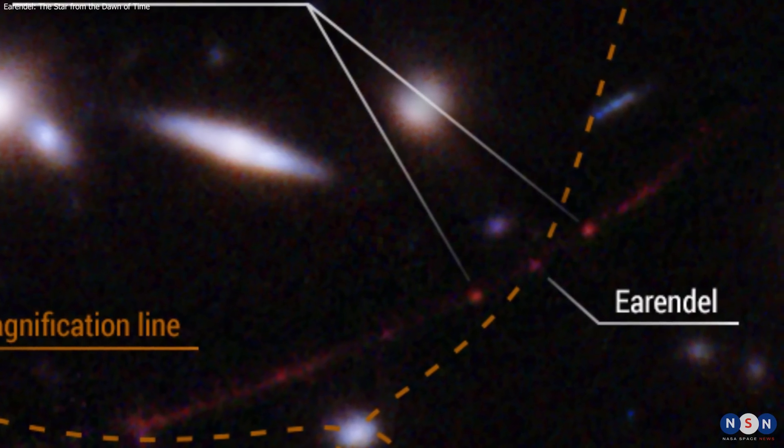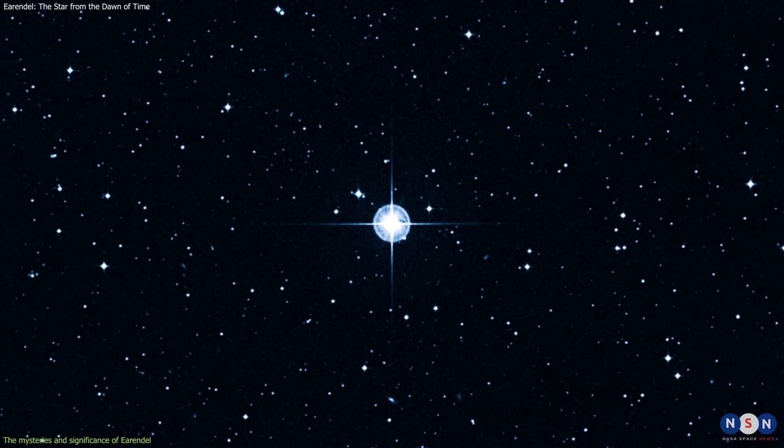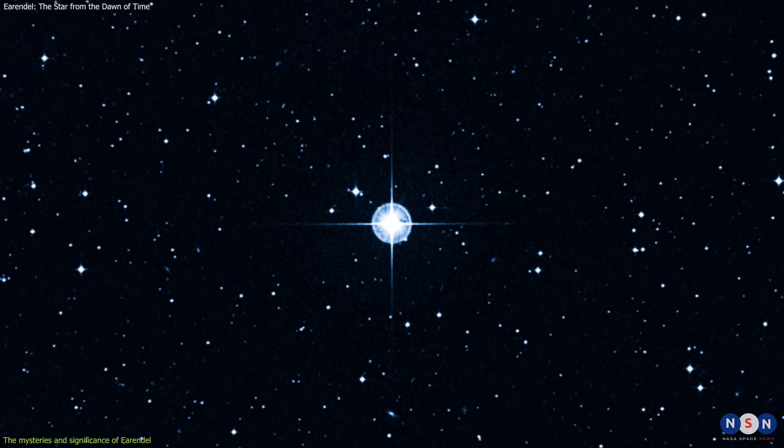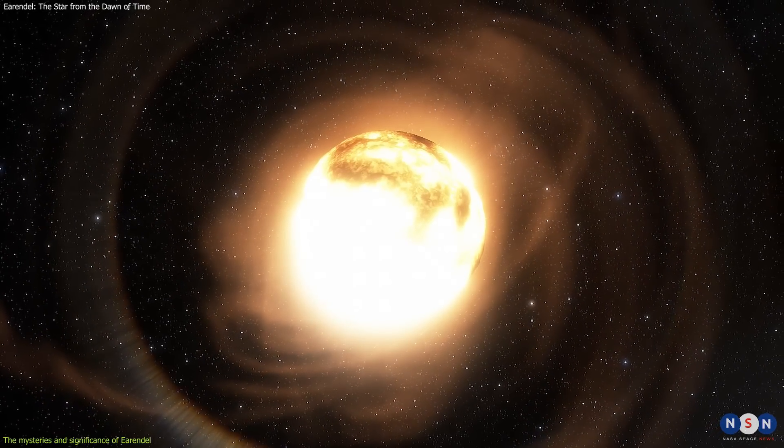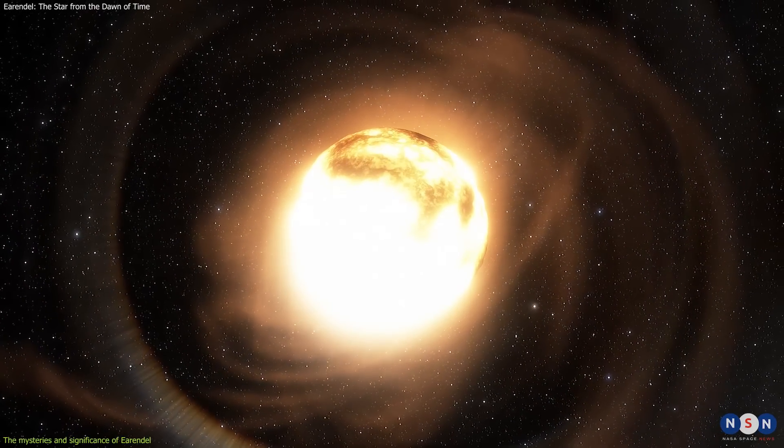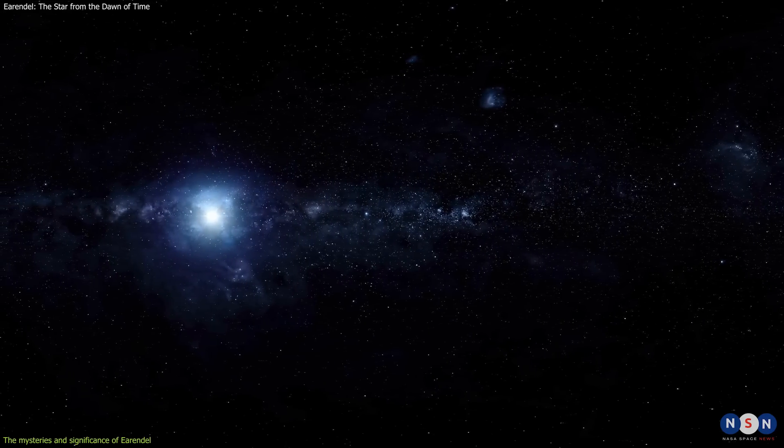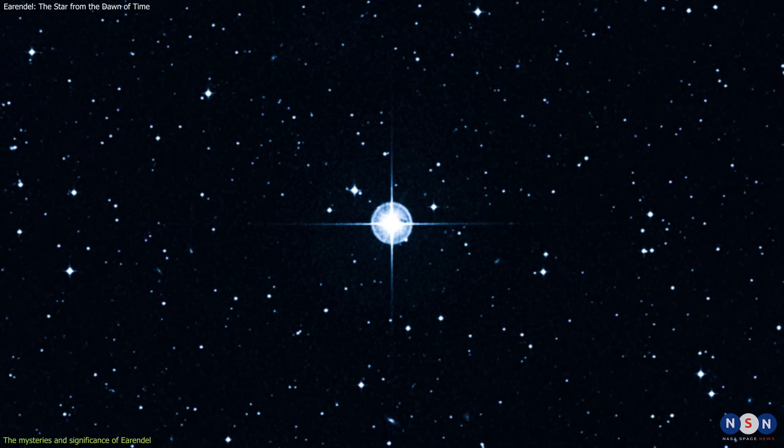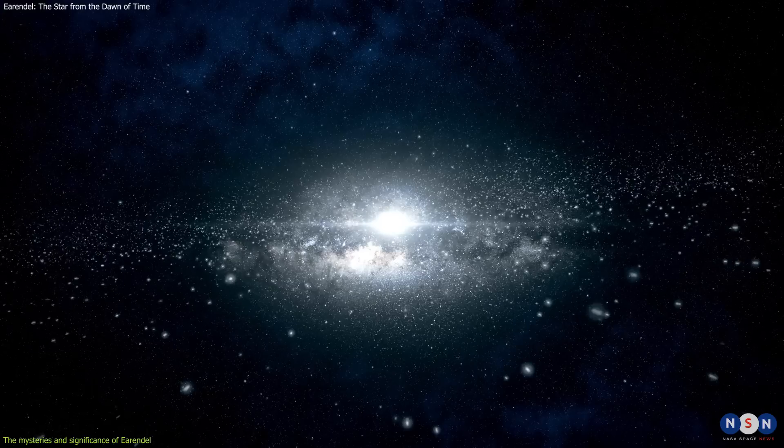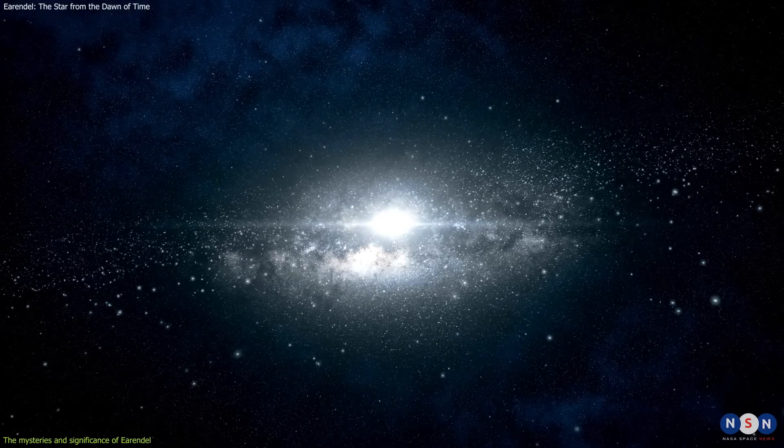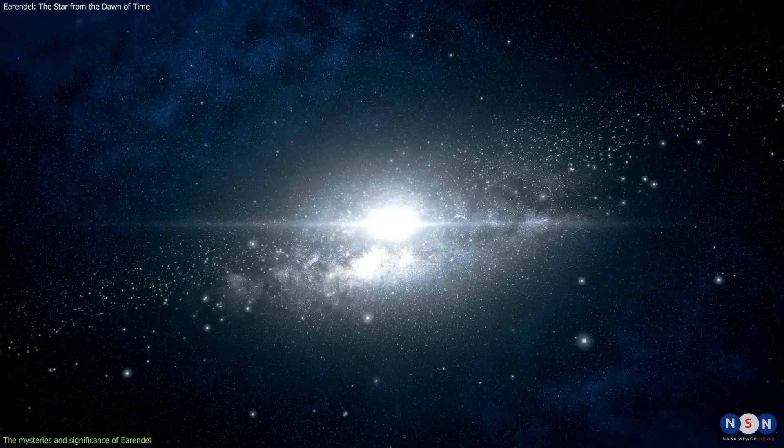One of the most intriguing questions about Earendel is how it compares to another ancient star, known as the Methuselah Star, HD 140283. The Methuselah Star is a yellow subgiant located in the constellation Libra, about 190 light-years away from Earth. It is one of the oldest stars known, with an estimated age of 14.46 plus or minus 0.8 billion years. This age range would make it older than the universe itself, which is calculated to be about 13.8 billion years old.